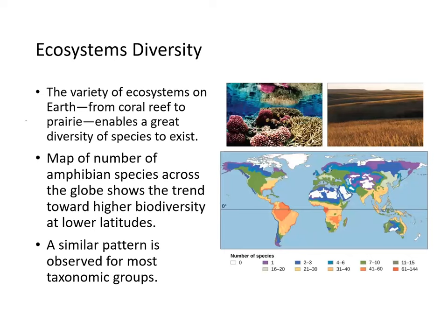Ecosystem diversity — the variety of ecosystems on Earth, from coral reefs to prairie — enables the great diversity of species to exist. Here's a coral reef, here's a prairie, and the number of species that exist in different habitats is estimated here.